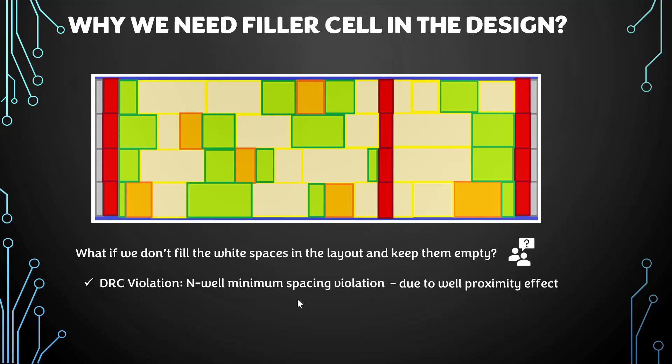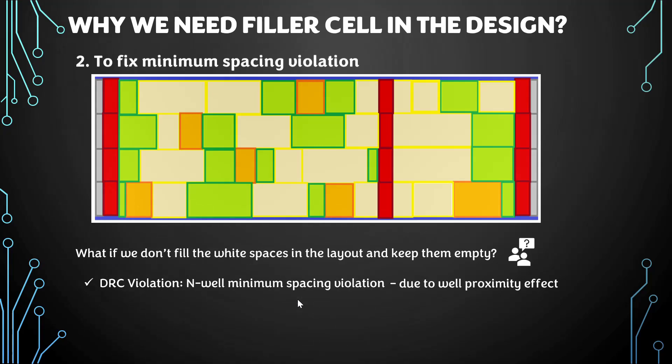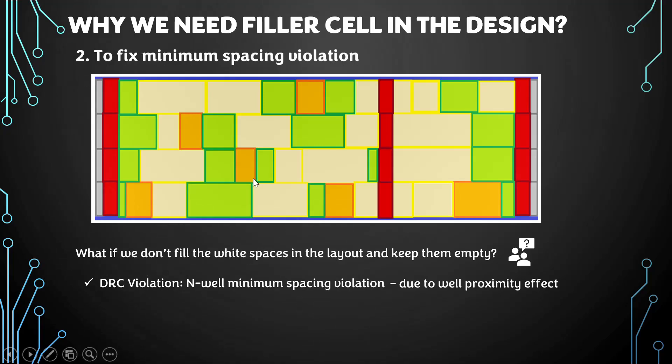What is the well proximity effect? When NMOS or PMOS transistors are close to the edge of a well, they experience a difference in threshold voltage compared to transistors placed far from the edge. In simple terms, the increase of Vt due to the proximity of a well to the transistor is the well proximity effect. This gives us the second reason to have a filler cell — to maintain minimum spacing and avoid this violation.